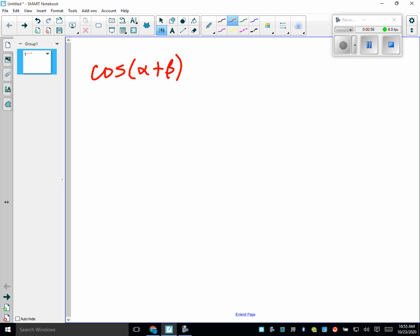Alright, if we're going to find cosine of alpha plus beta, we need to know something about those angles. So I'm going to tell you alpha is in quadrant 3, and the sine is negative 3 fifths. Beta is in quadrant 2, and the cosine of beta is negative 3 fourths.